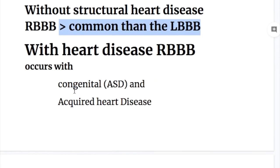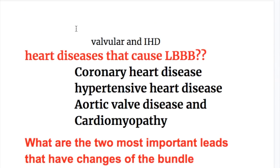And with structural heart diseases, right bundle branch occurs with congenital or acquired conditions both. Example of congenital is atrial septal defect. And with the acquired heart diseases, it occurs in valvular and ischemic heart diseases.